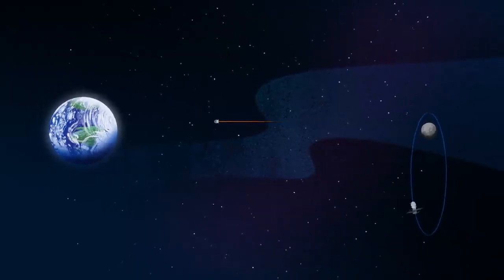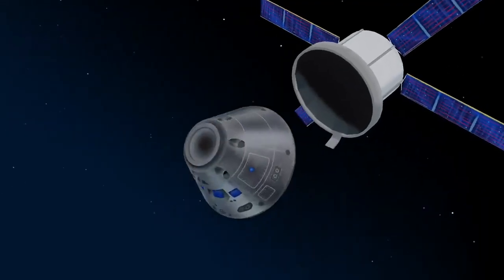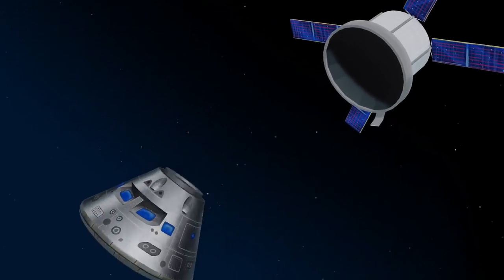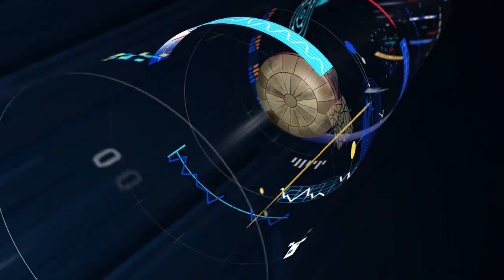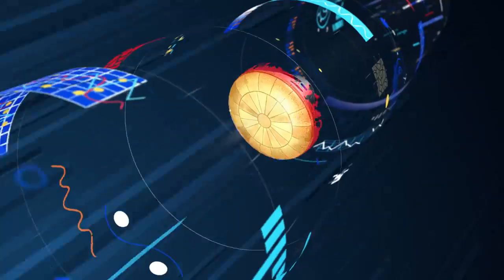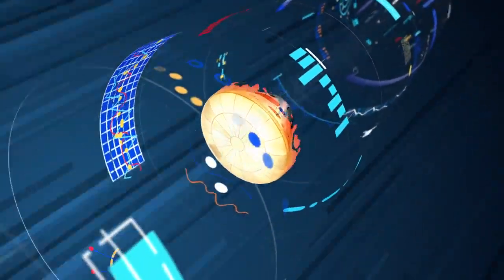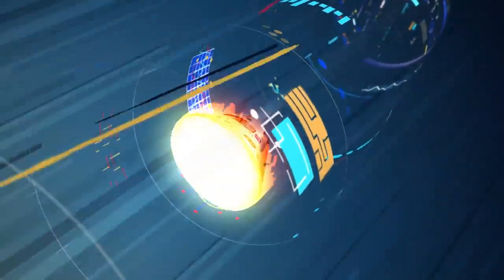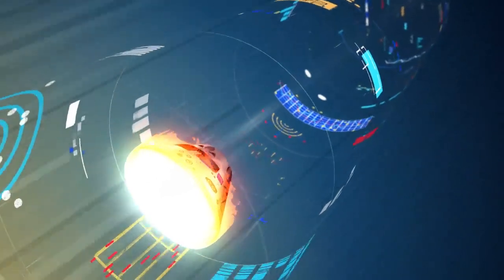As they near the end of this journey, the service module is released, and the crew module is oriented heat shield first. Entering Earth's atmosphere at 25,000 miles per hour, the friction of air slows Orion considerably, while also subjecting it to temperatures of 5,000 degrees.